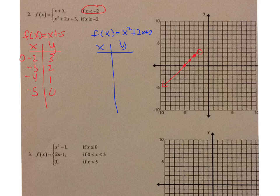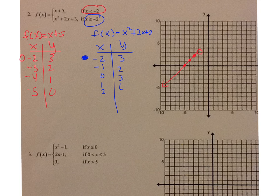Now let's go to the quadratic. Plug in x squared plus 2x plus 3. My x has to be greater than or equal to negative 2, so I'll start at negative 2 and it will be a solid circle. Then negative 1, 0, 1, 2. The y values are 3, 2, 3, 6, and 11 — we won't be able to graph 11, it'll go off the graph. So at (negative 2, 3) it's a solid circle; then (negative 1, 2); (0, 3); (1, 6); and (2, 11) is up off the graph. So it looks like this.